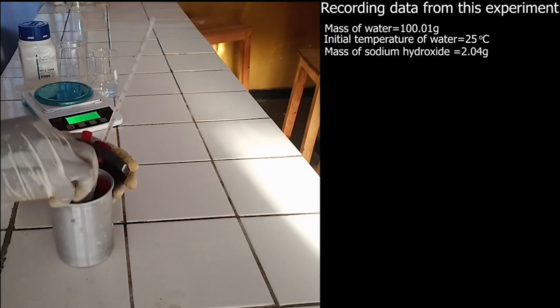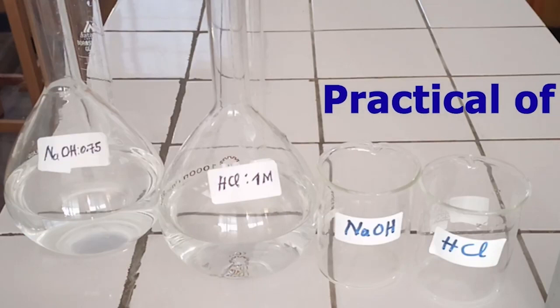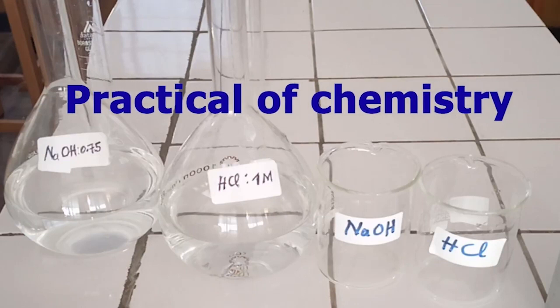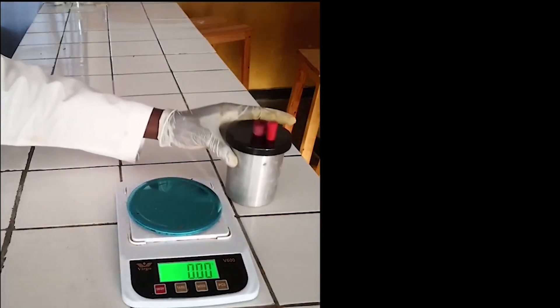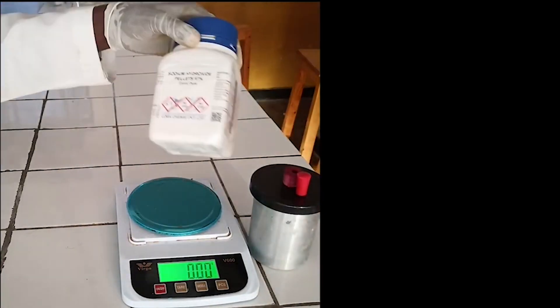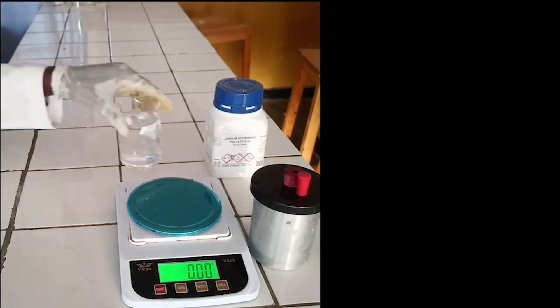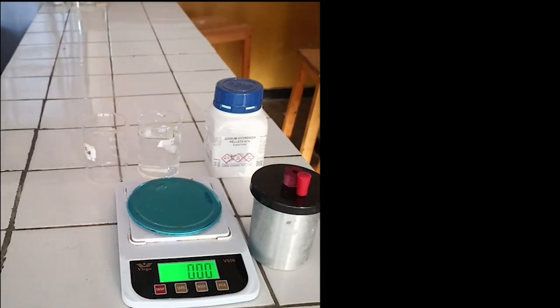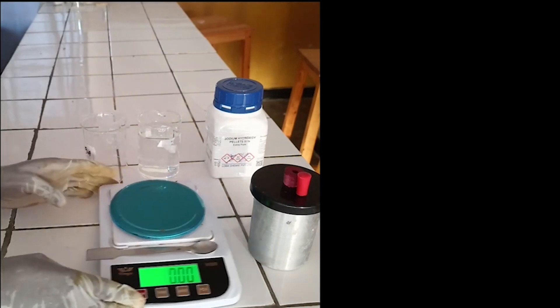Determination of Enthalpy Change of Solution by Experiment. The materials and chemicals needed in this experiment are: Electronic Balance, Cup Calorimeter, Sodium Hydroxide Crystals, Water, Big Beaker and Small Beaker, Spatula, and Thermometer.